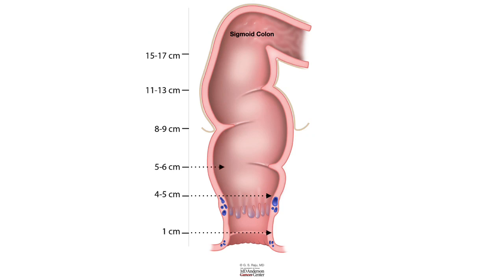The inferior valve of Houston is about 5 centimeters from the anal verge. The middle valve of Houston is about 8 centimeters. And the superior valve of Houston is about 10 to 11 centimeters from the anal verge.